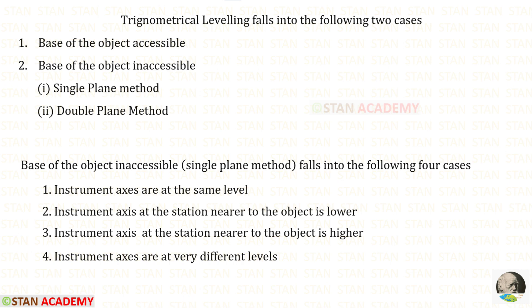Hello everyone, today we are going to see the fourth lecture in trigonometrical leveling. In the base of the object inaccessible method and in single plane method, we are going to see the third case: instrument axis at the station nearer to the object is higher.